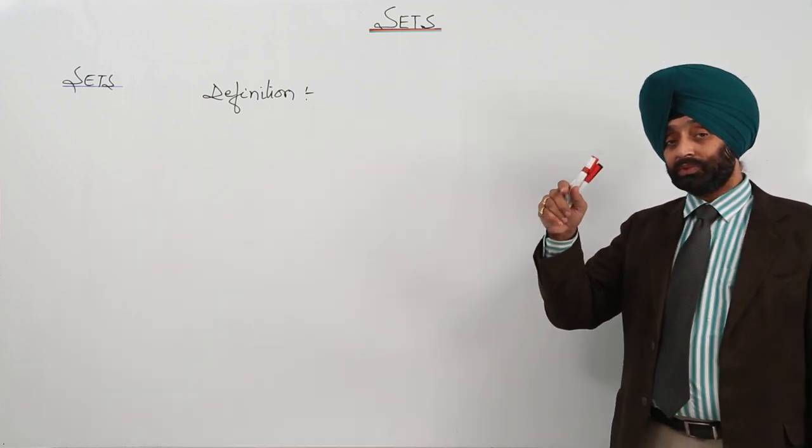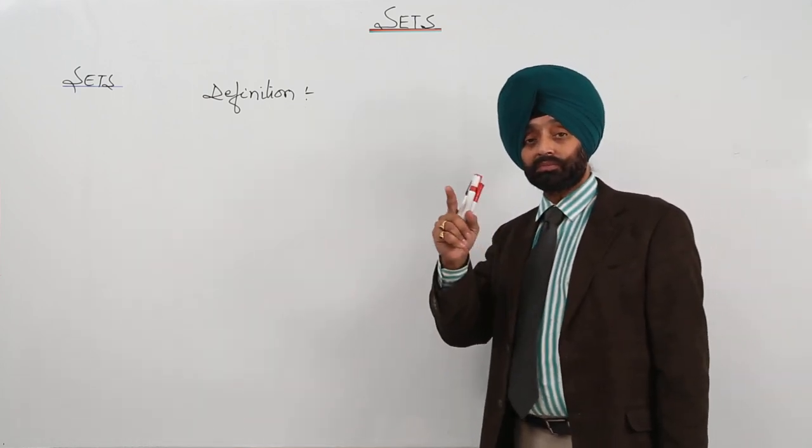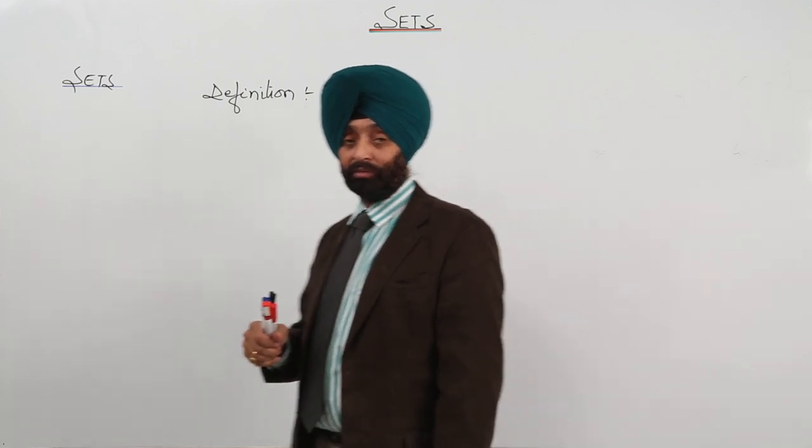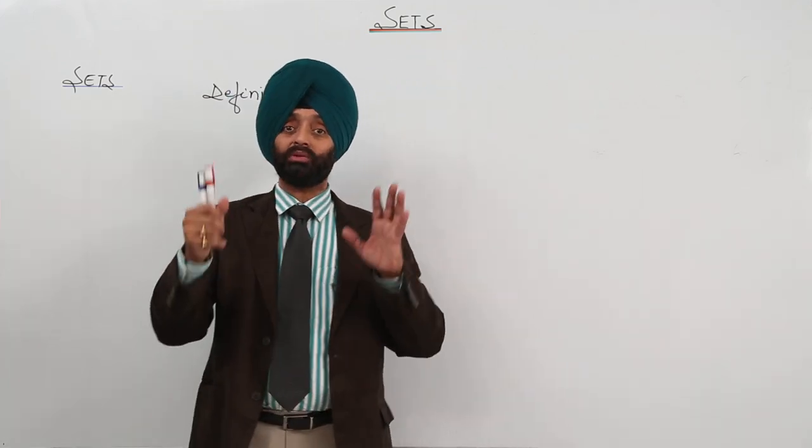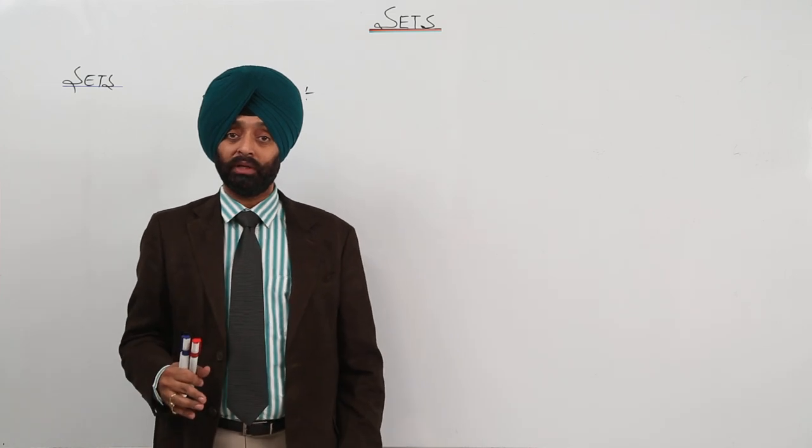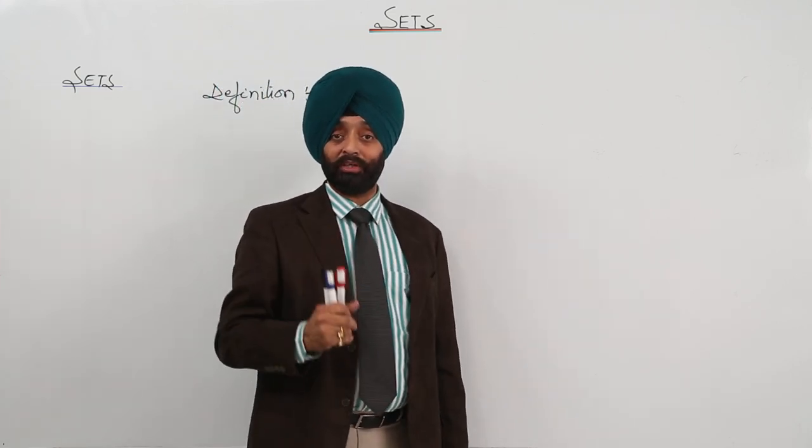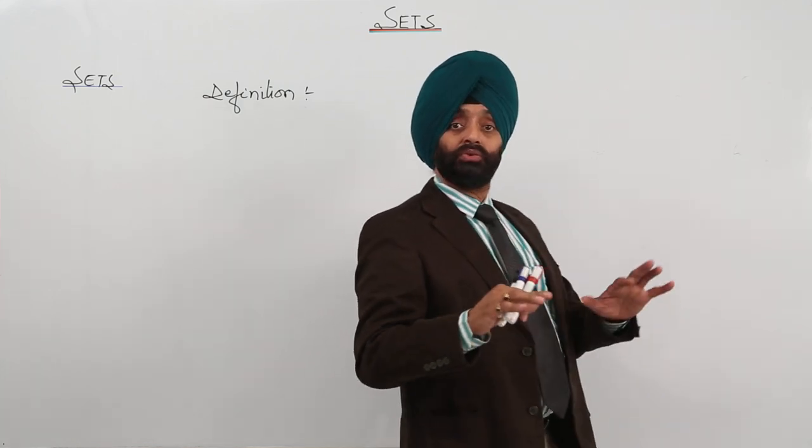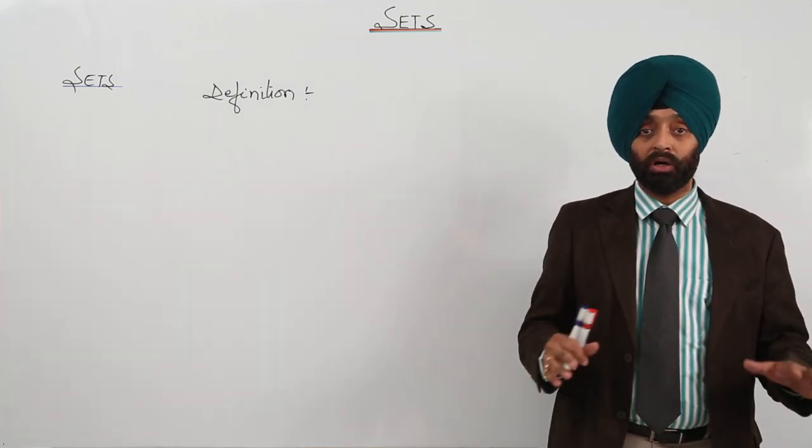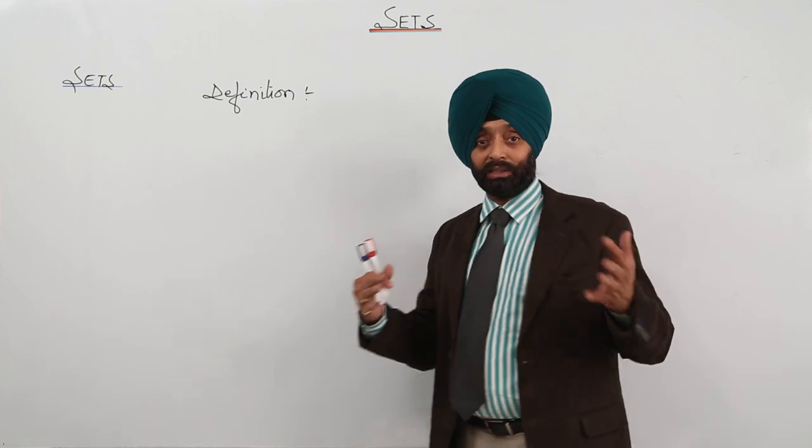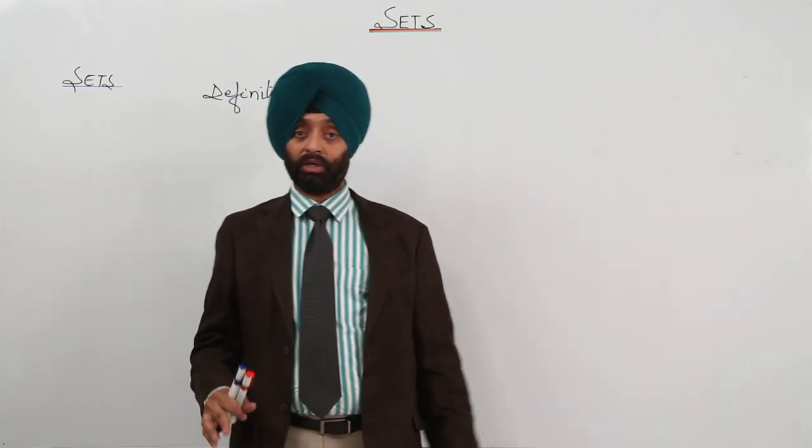Because in the second example I asked you about vowels in the English alphabet. You said yes, we can count on our fingers. We know that A, E, I, O, U are the vowels. You can count them. But what about the famous mathematicians? In this universe, in this world, I can't say which are the 10 famous mathematicians.